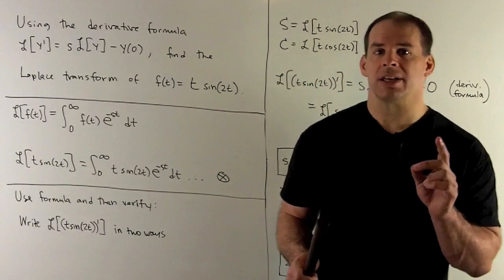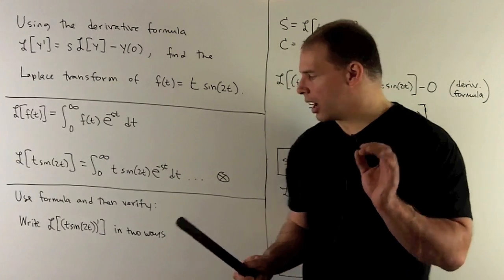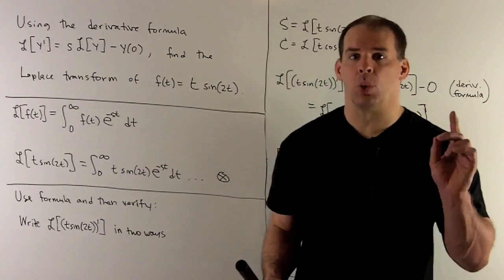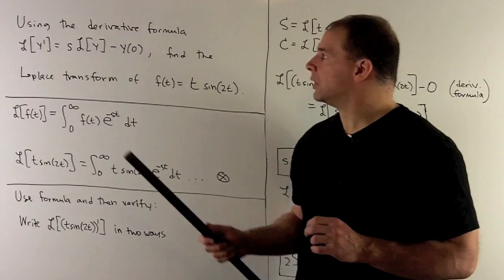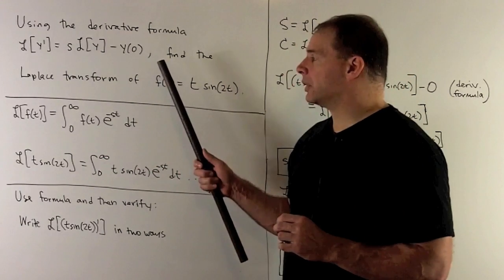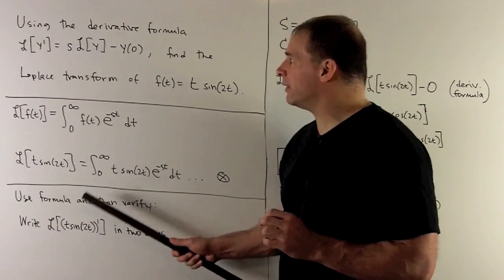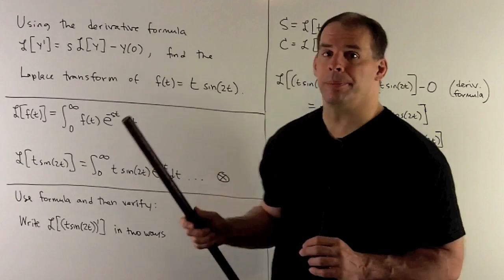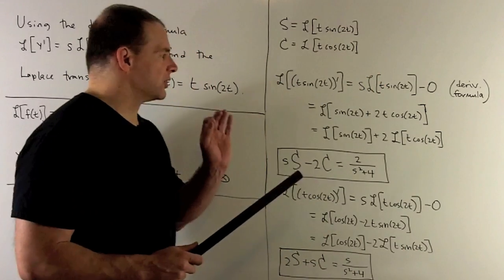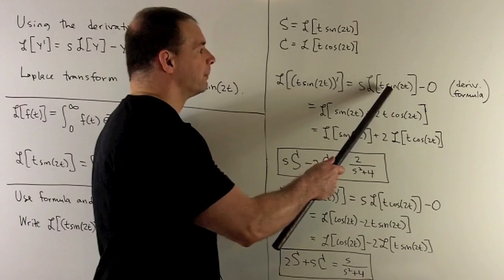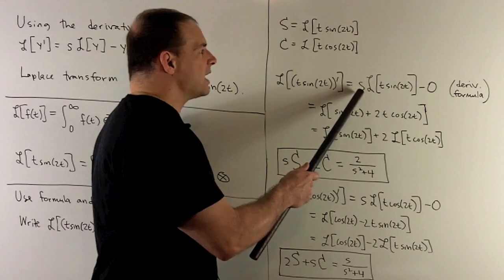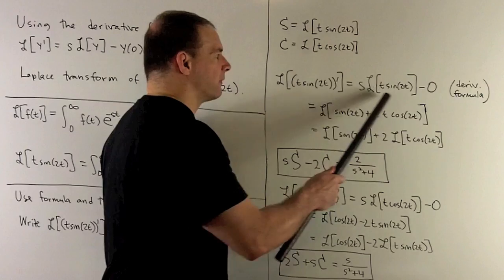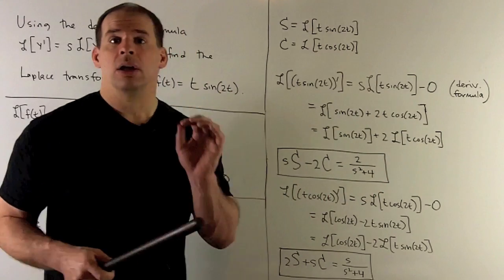Our trick is going to be to write the Laplace transform of the derivative of t·sin(2t) in two ways. The first way, we just use the formula: take the Laplace transform of the derivative, which means you remove the derivative, multiply by s, and then evaluate at 0. When we evaluate at 0, we get 0. So that's our first expression.